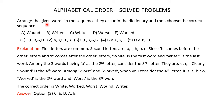Arrange the given words in the sequence they occur in the dictionary and then choose the correct sequence. You are given 5 words: Wound, Writer, White, Versed, and Worked. You have to arrange these words in the sequence that they occur in the dictionary, meaning in alphabetical order, and then choose the correct sequence from the given options.